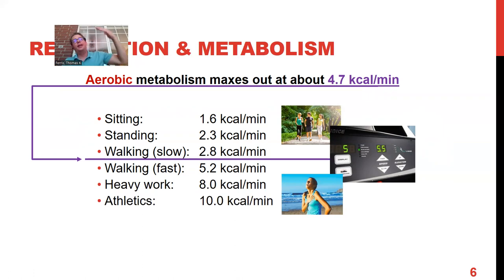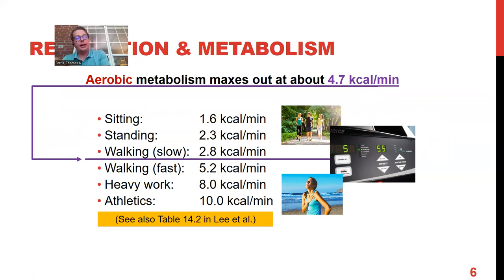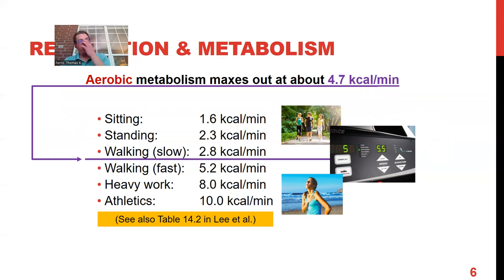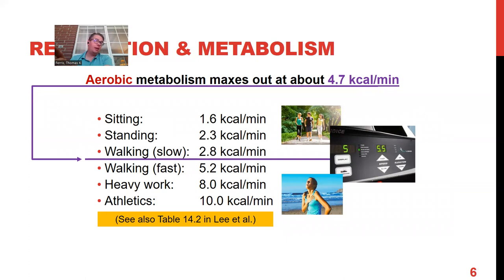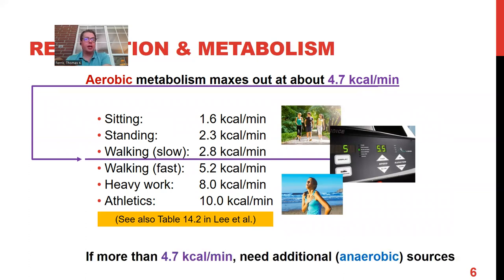Of course, as activities get heavier — say 10 kilocalories per minute — the textbook has more descriptors of common work activities and their required metabolic rates. For activities requiring those levels, we're going to need anaerobic metabolism, so you can count on sore and fatigued workers. You may need to work in additional break time or job rotation.